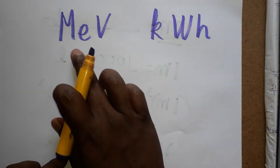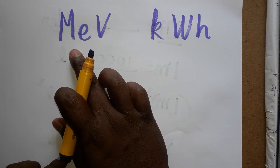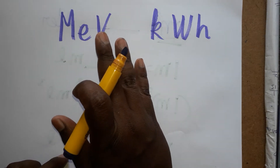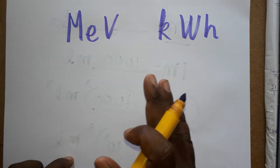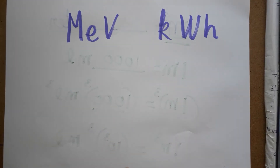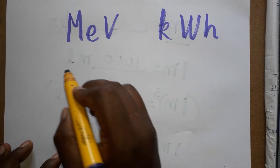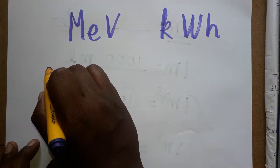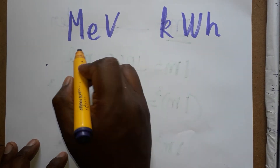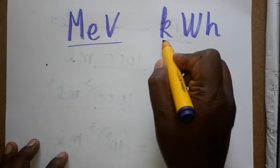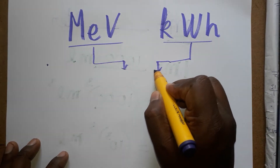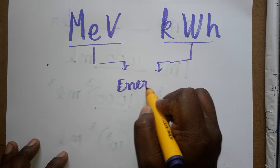In this video we are going to discuss one MeV is equal to how many kWh, and also which is greater — one MeV or one kWh — and also one kWh is equal to how many MeV. First we will learn what is MeV: mega electron volt, or million electron volt. Both MeV and kWh are units of energy, so we can convert them to joules.